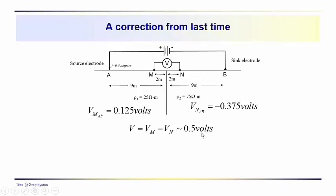I wanted to clarify some notation from last time. We had the potentials calculated at M and N relative to the source and sink electrodes. We can refer to the potential at M relative to A and B as V_M(AB), and likewise for N. Taking the difference between those two — 0.125 minus 0.375 — we get 0.5 volts. So the answer was correct, just the notation was a little sloppy.